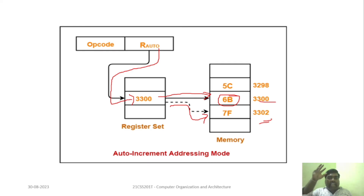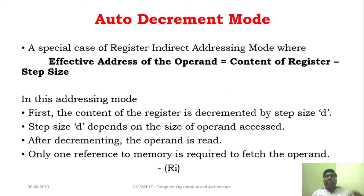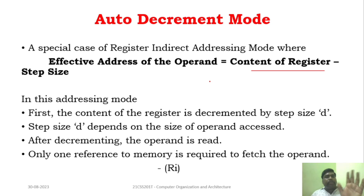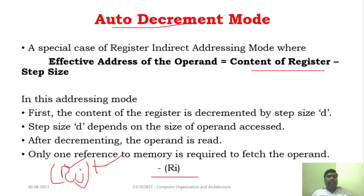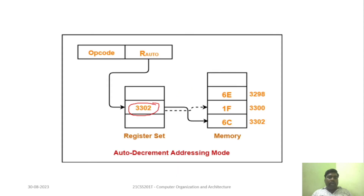Auto increment means: after accessing the content of the register, the register is incremented. For auto decrement, before accessing the register it is decremented. Auto decrement is represented as -RI — first decrement, then access the register. Whereas auto increment is RI+ — first access, then increment.